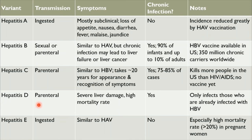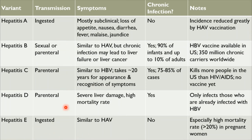Hepatitis D is transmitted parenterally and is particularly dangerous, associated with severe liver damage and a very high mortality rate. It does develop into chronic infection, but it only infects people already infected with Hepatitis B, as it requires a cell co-infected with Hep B in order to replicate. Hepatitis E, the final form, is ingested orally like Hepatitis A, is typically mild, and does not develop into chronic infection, but has an especially high mortality rate in pregnant women — over 20%.